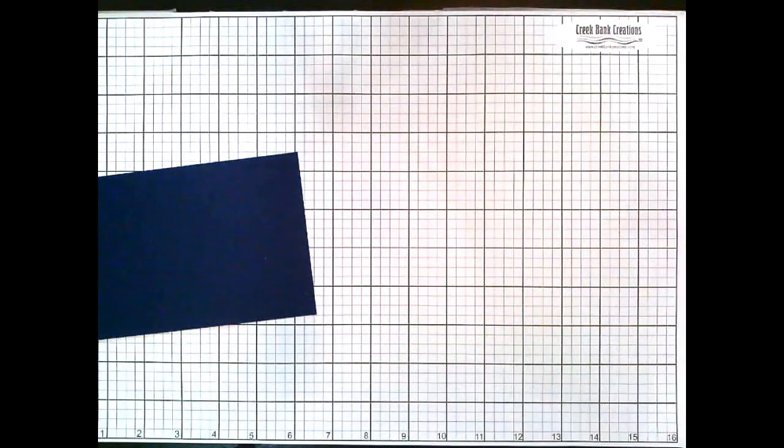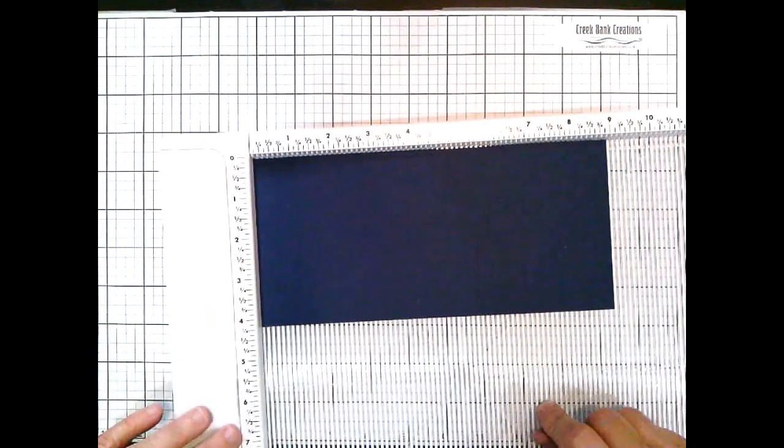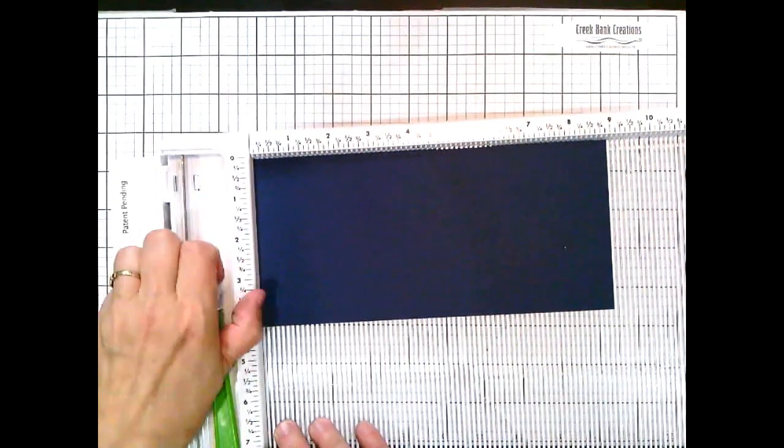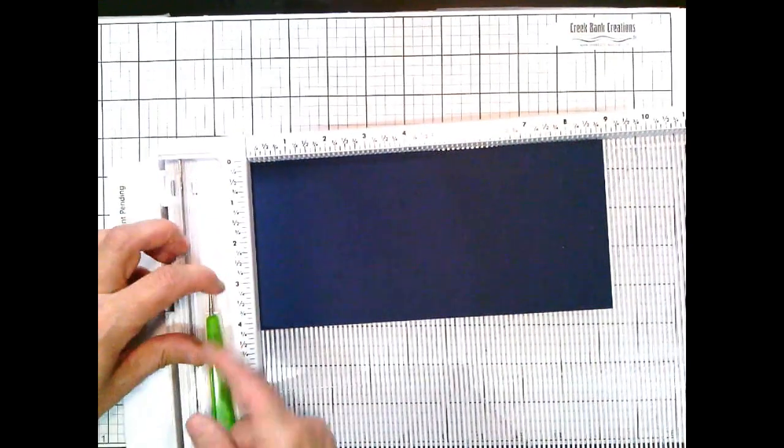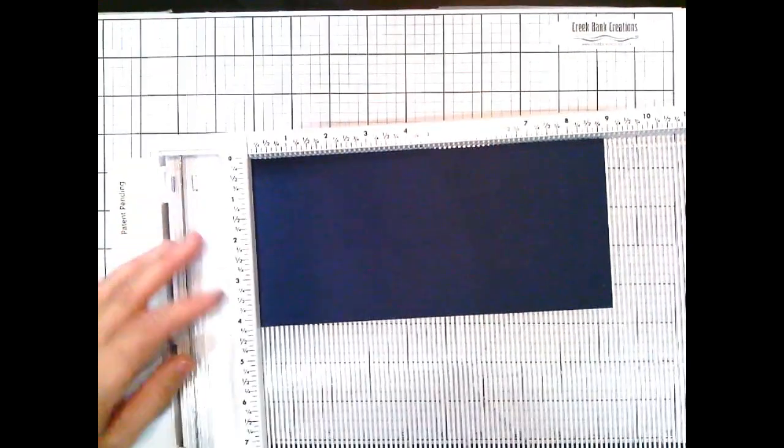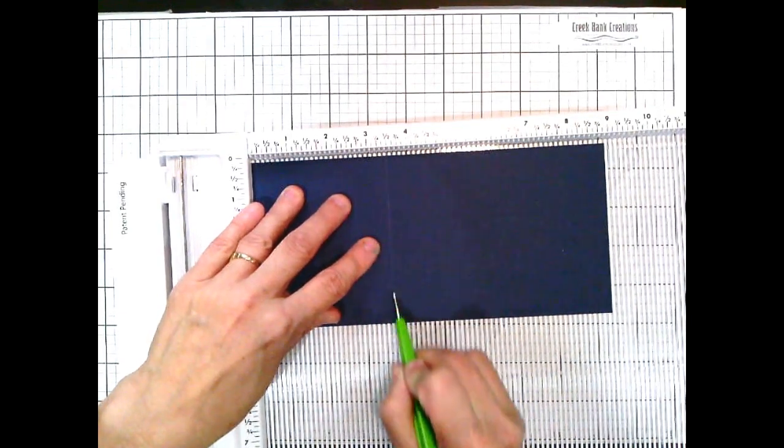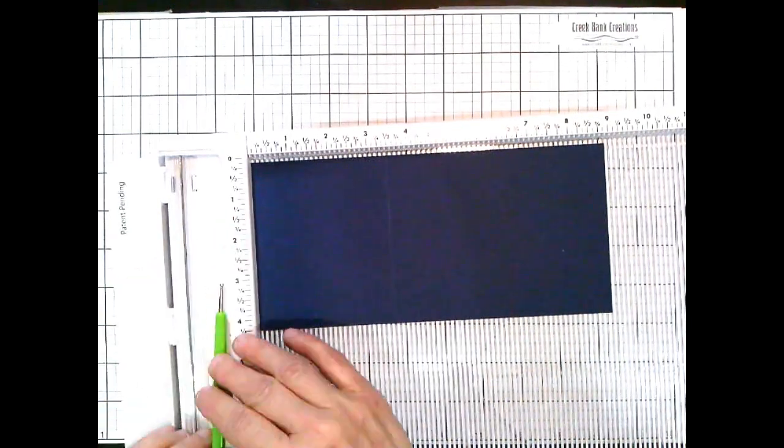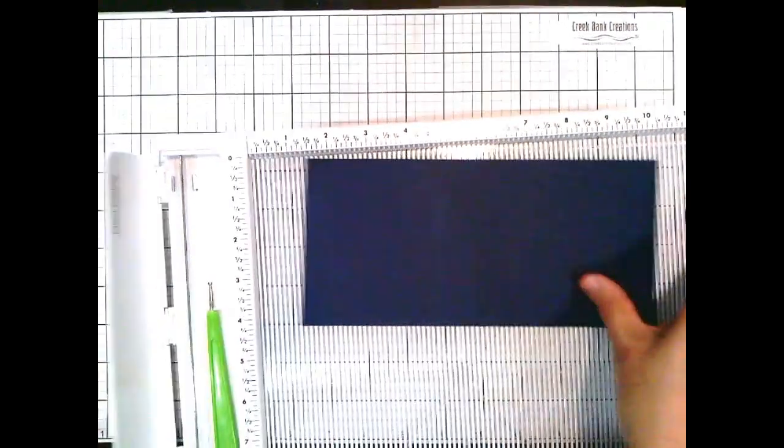Then we're going to take that piece of paper and we're going to put the long side of it up on our scoreboard. And we're going to score at 3.5 inches. If we can get our score tool out, there we go. We're going to score at 3.5. And then we're going to fold. That's going to give us the base part that we need.